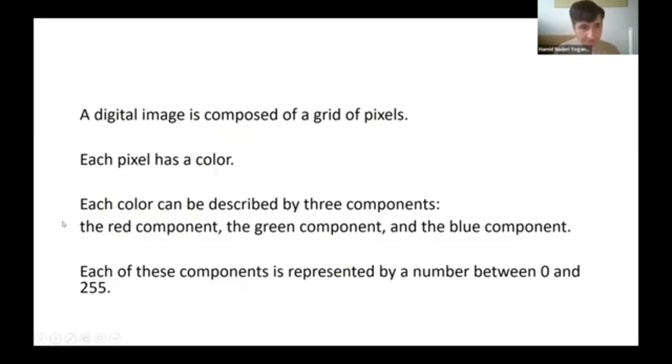Now, what is a digital image? A digital image is composed of a grid of pixels. Each pixel has a color. Each color can be described by three components: the red component, the green component, and the blue component. Each of these components is represented by a number between 0 and 255. It is called RGB code.